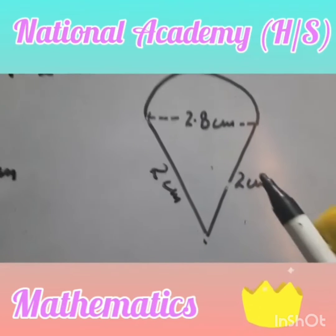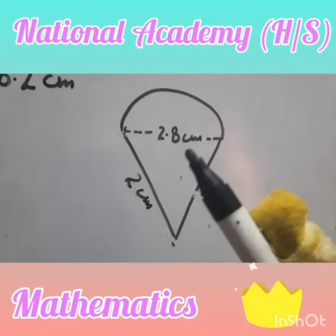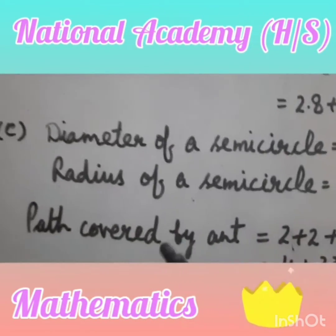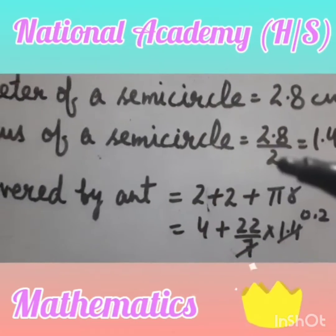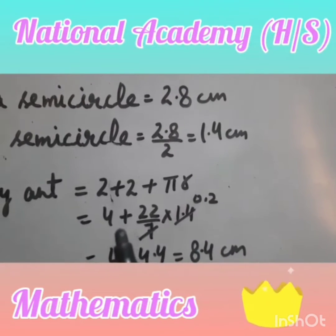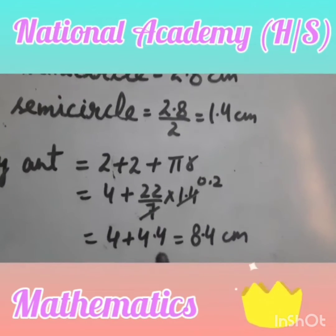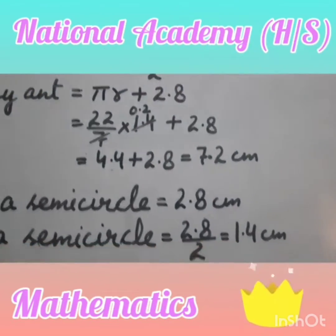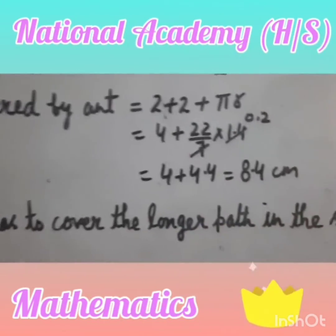The third piece also has a semicircle with diameter 2.8 cm and radius 1.4 cm. The path covered: 2 + 2 + semicircle = 4 + π × 1.4 = 4 + (22/7) × 1.4 = 4 + 4.4 = 8.4 cm. Therefore the ant has to cover the longer path in the second piece, which is 10.2 cm.